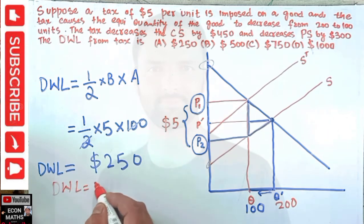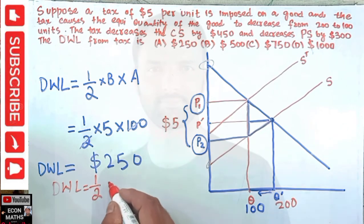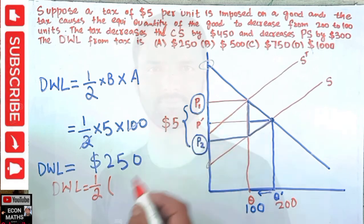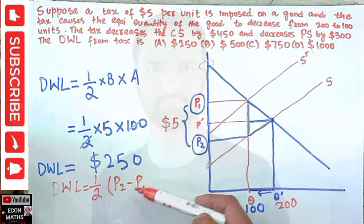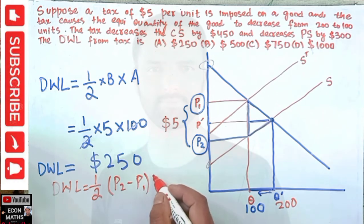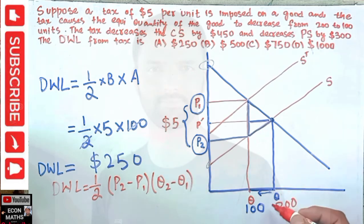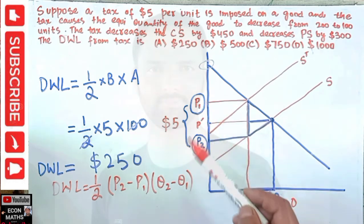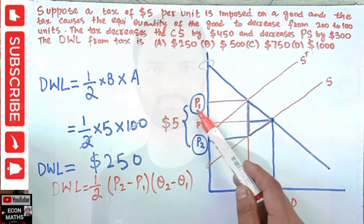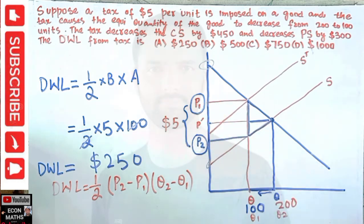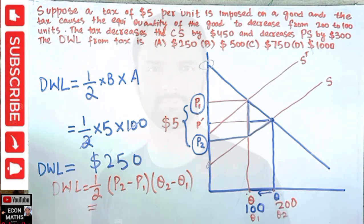The actual formula for dead weight loss is: DWL = ½ × |P1 − P2| × |Q2 − Q1|, where P1 is the price consumers pay, P2 is the price sellers receive, and the difference in quantities is the change in equilibrium quantity. The change in quantity is from 200 to 100, which is 100. This is the formula for calculating dead weight loss.